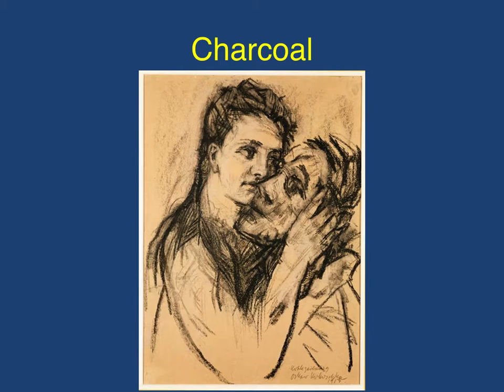The next medium is charcoal. Charcoal is made from burnt wood and, like chalk, also needs a rough surface. Charcoal smudges very easily, and if you're going to work in charcoal, when you're done you'll have to fix it so it will stop smudging. Historically, charcoal was used for outlines especially in frescoes and murals. The artist would draw lightly with charcoal and then paint over it. In some frescoes you can still see some of the original charcoal markings.